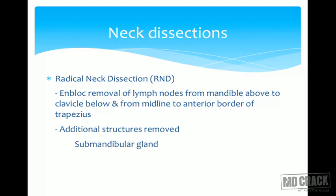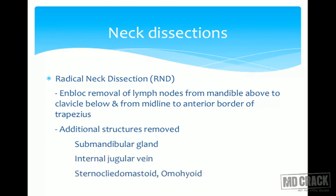The first type is radical neck dissection. It is the en-bloc removal of lymph nodes from the mandible above to the clavicle below, and from the midline to the anterior border of trapezius. The additional structures removed in radical neck dissection are: the submandibular gland, internal jugular vein, sternocleidomastoid muscle, omohyoid muscle, spinal accessory nerve, and cervical plexus.